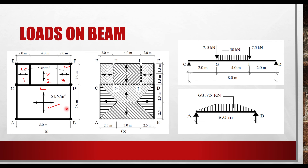Another beam shown is beam AB, which is acted upon by a uniformly distributed load due to the slab in panel 4. Practically, it is much easier for structural engineers to analyze a beam with a uniformly distributed load rather than a uniformly varying load. That is why there are coefficients that allow engineers to convert a uniformly varying load to an equivalent UDL, making analysis simpler.